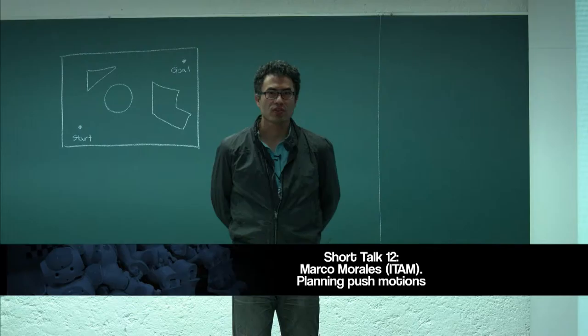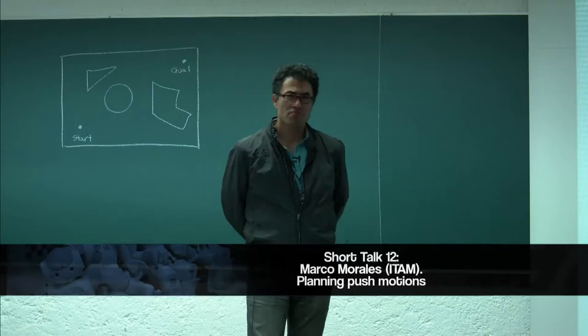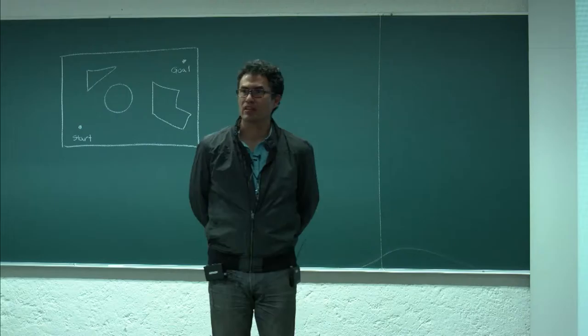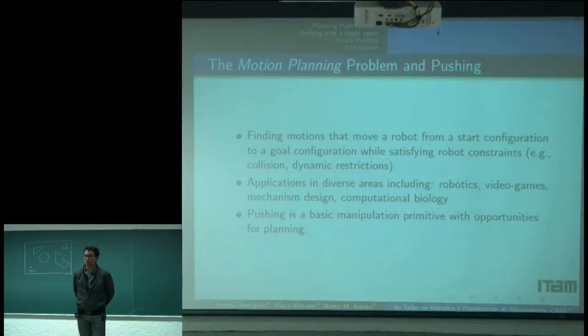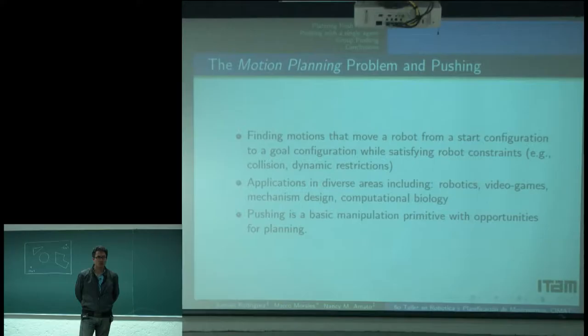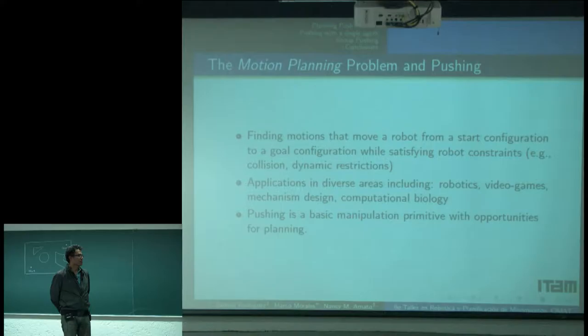Most of the talks have been more about control rather than motion planning, which is also a problem for control. But I see motion planning at a higher level, where we want to find a sequence of motions to move our robot from a start configuration to a goal configuration while satisfying robot constraints, including obstacle avoidance.